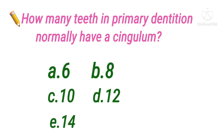The next question: how many teeth in the primary dentition normally have a cingulum? Options are A 6, B 8, C 10, D 12, E 14. All anterior teeth — both incisors and canines — in both permanent and primary dentition have a cingulum or bulge on the cervical third of their lingual surface. So four central incisors plus four lateral incisors plus four canines equals 12 teeth with a cingulum.